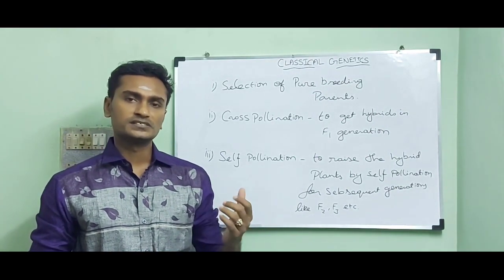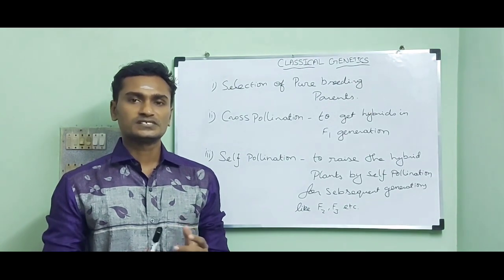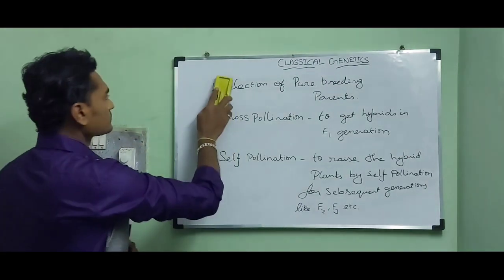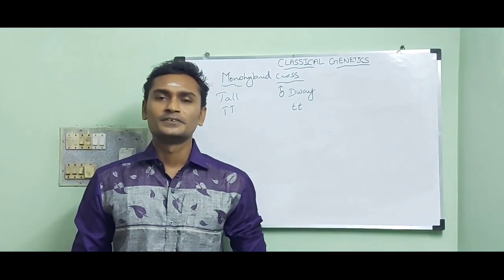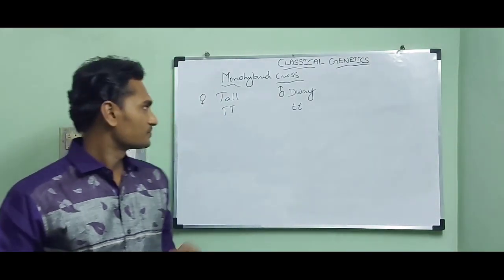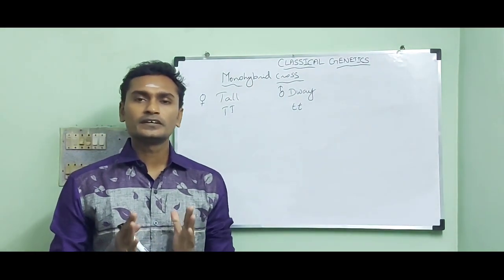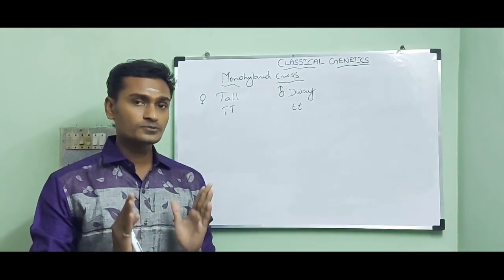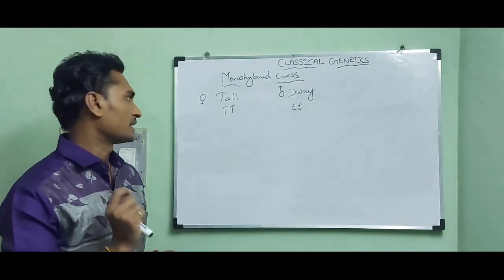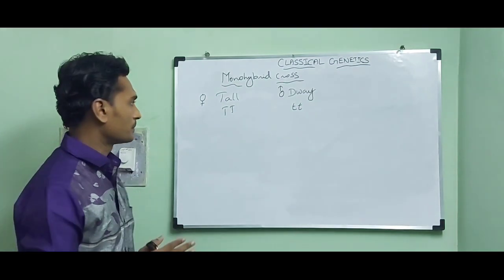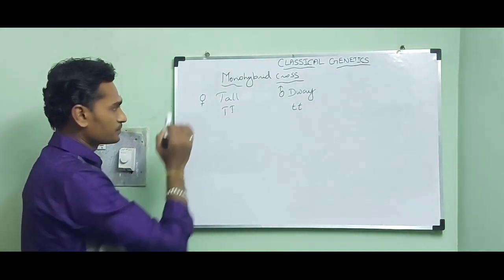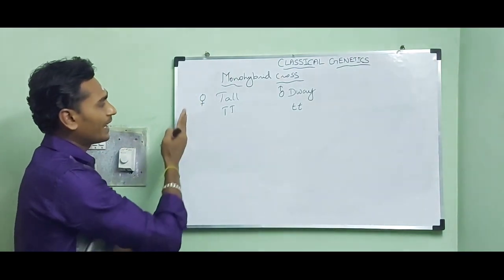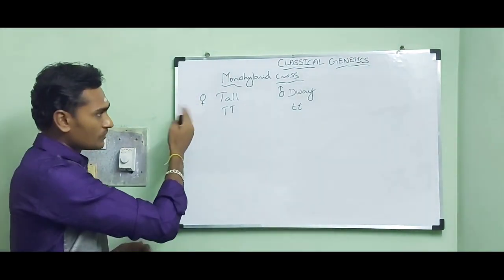Let's go to the explanation of crosses. First, I go with monohybrid cross. According to the first rule of Mendel's hybridization experiment, we have to select pure breeding parents. This is the first parent — homozygous tall — and that plant acts as female.